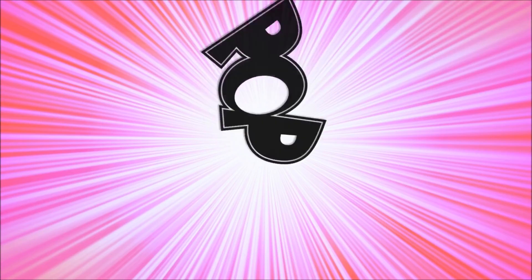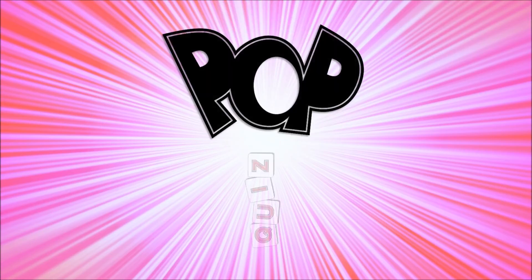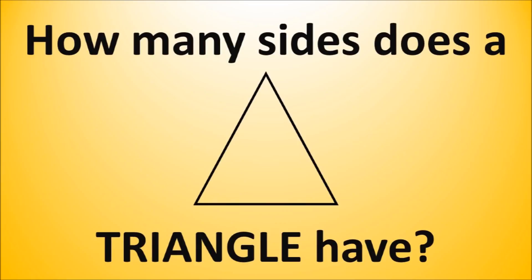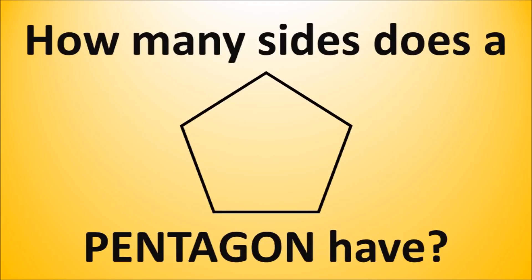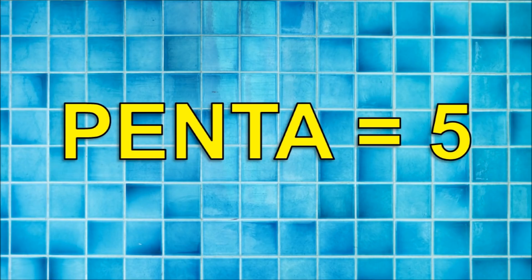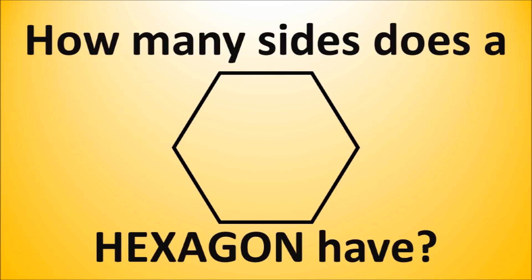Alright kids, it's time for a pop quiz! How many sides does a triangle have? Three — tri means three. And what about the sides for a quadrilateral? Four — quad means four. How many sides does a pentagon have? Five — penta means five. How many sides does a hexagon have? Six — hex means six.